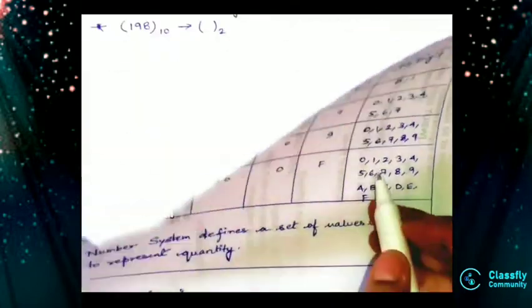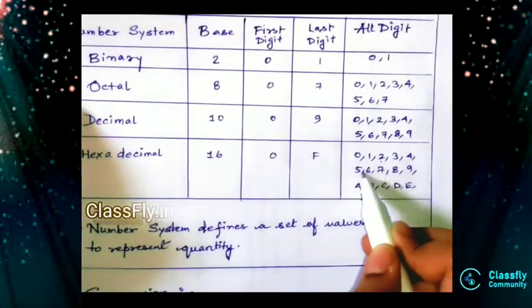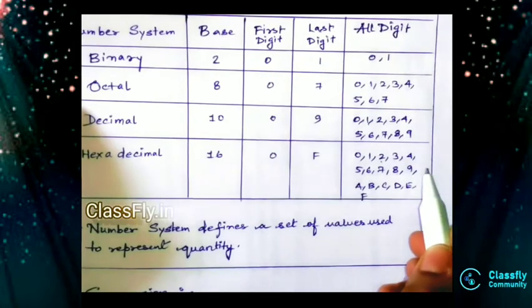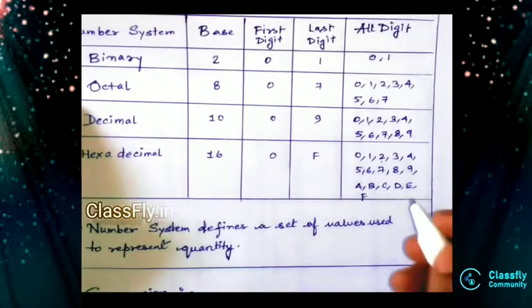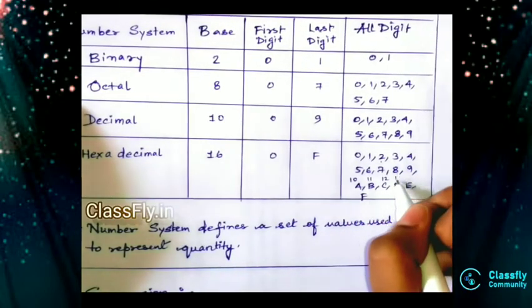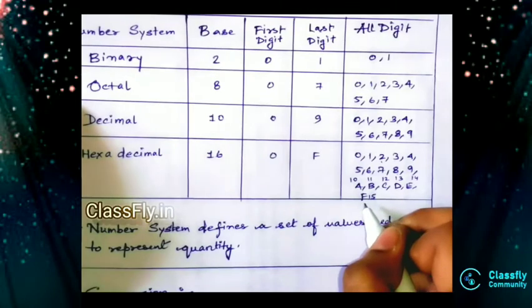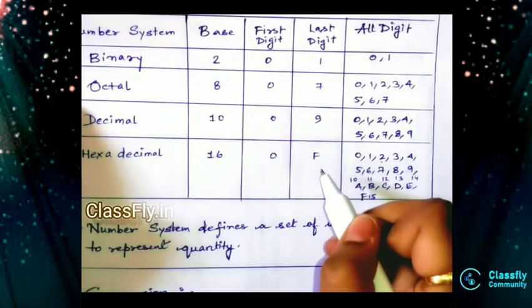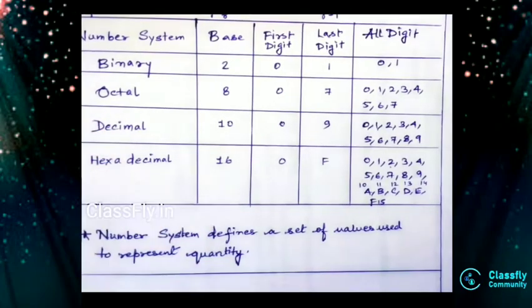And why we wrote F? Because see, the numbers are 0, 1, 2, 3, 4, 5, 6, 7, 8, 9. After 9, we don't represent numbers in two digits, that is 10, 11, 12, 13, 14, 15. As 15 is coming at the F place, we place here the last digit as F. This is basically the number system and the types of number system.